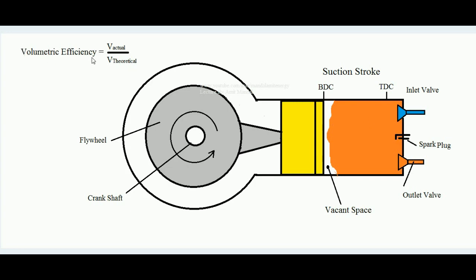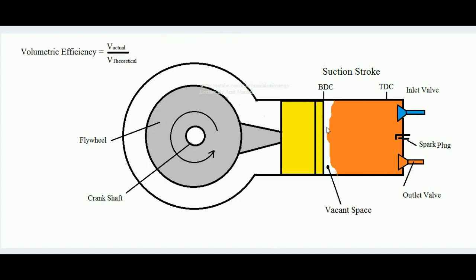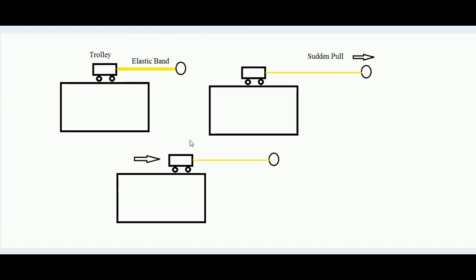Now why is this happening? If the piston is creating a vacuum inside, why isn't the charge filling it at the same speed? This can be understood by the following experiment. This is a trolley — a cart with wheels — connected by an elastic band, ending with a ring, and resting on a horizontal surface.